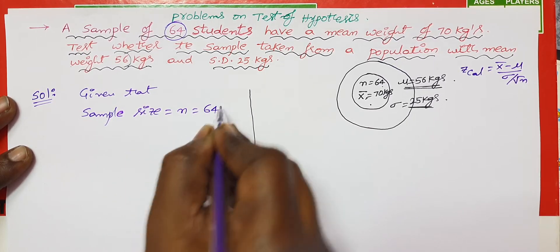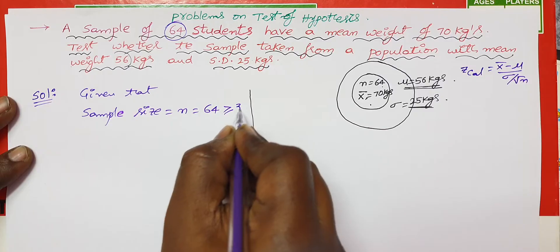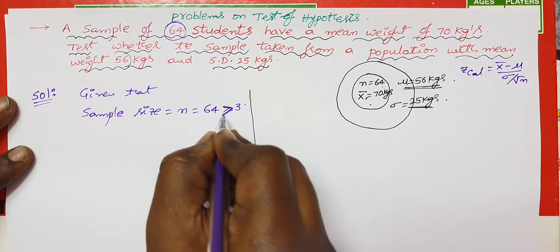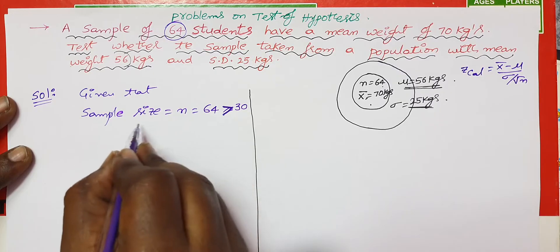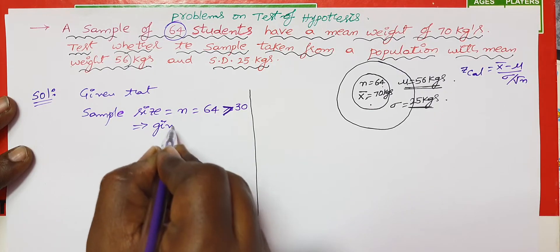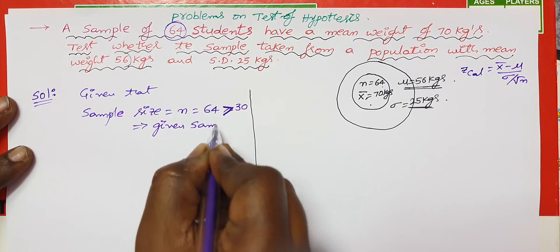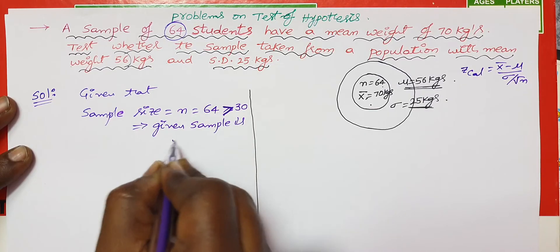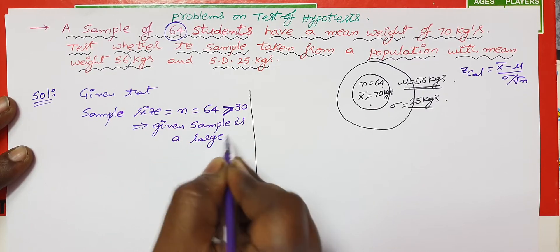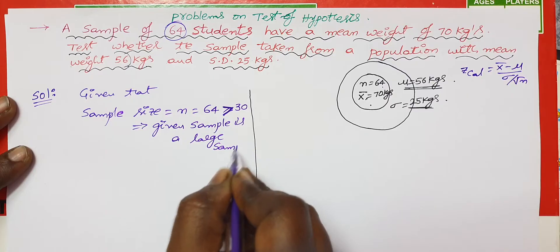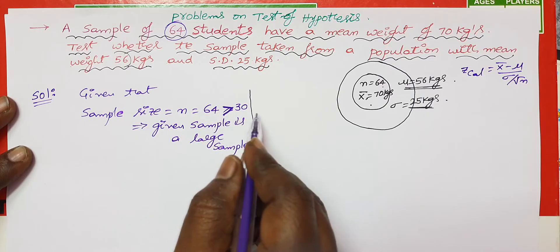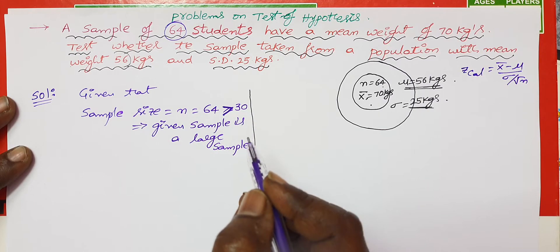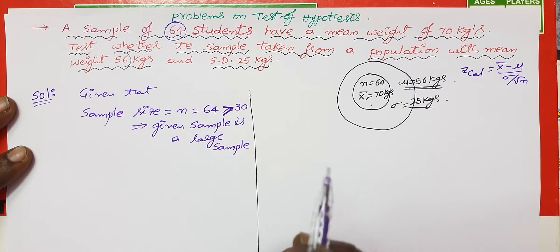The sample size n is equal to 64. Since sample size is greater than 30, the given sample is a large sample. So we use Z distribution table values. If the sample size is less than 30, it will be a small sample and we use a small sample distribution table.